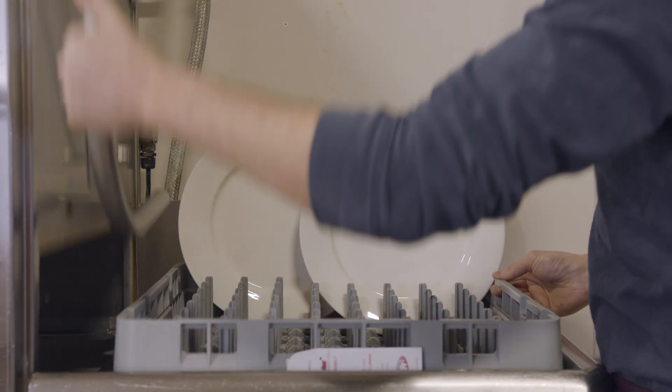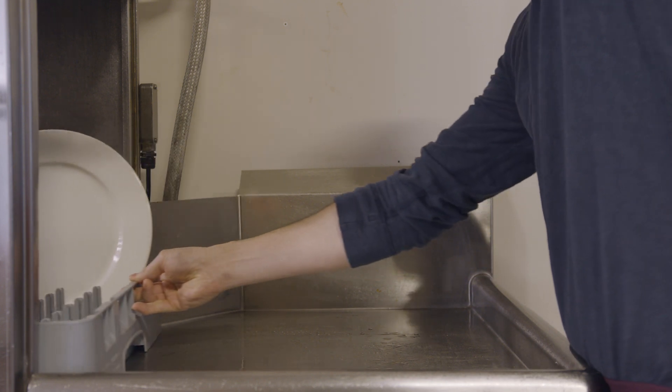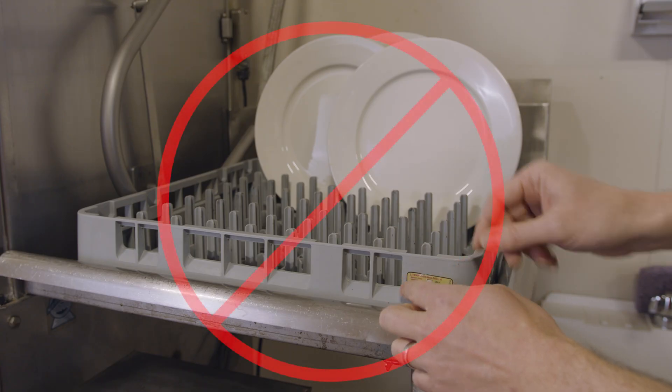The label must go on a dish, glass, or other piece of dishware that is being cleaned and sanitized. It does not go on the rack of the dishwasher itself.